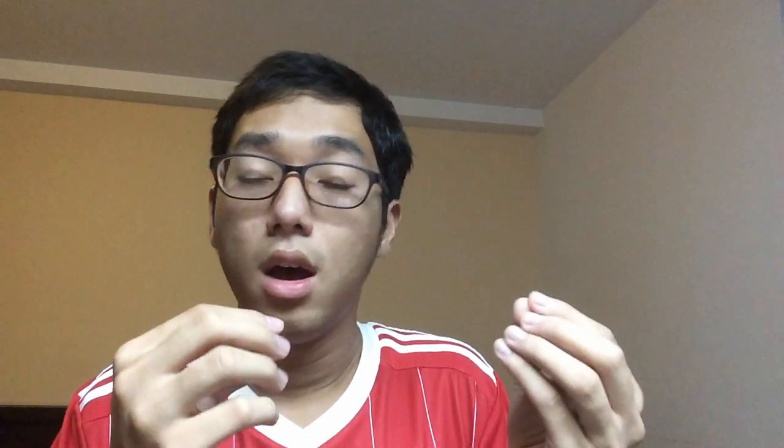So, now we have sort of the average flux about a certain point. And what now? If I squeeze this volume down so it's smaller and smaller, and so small that it just covers the point that we have.